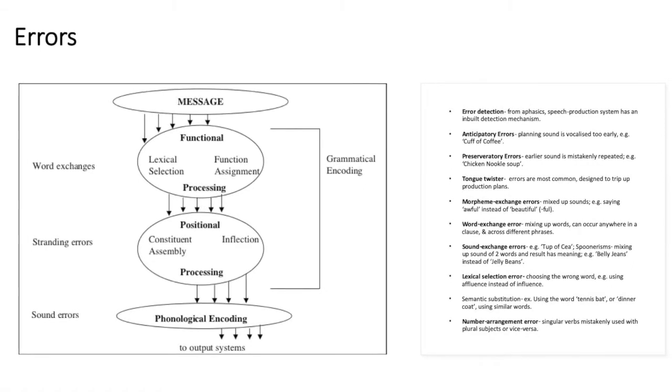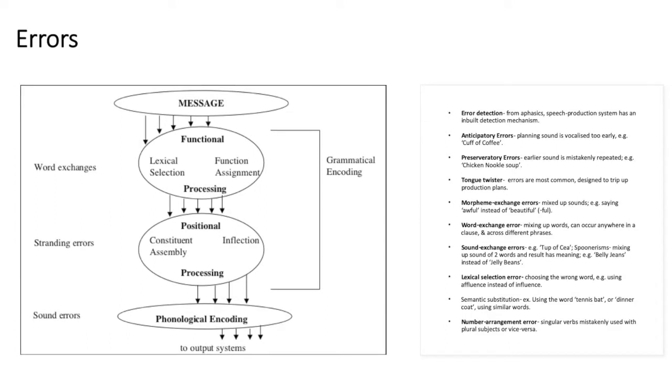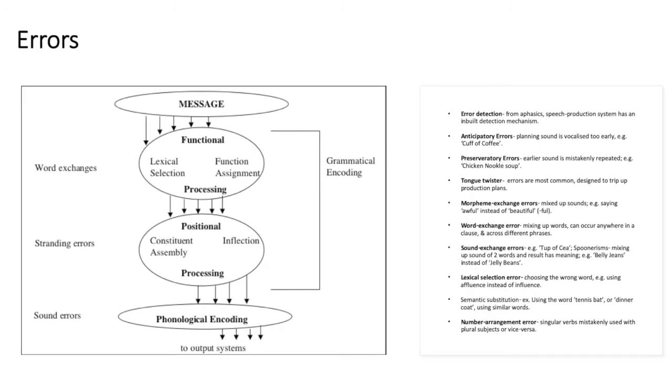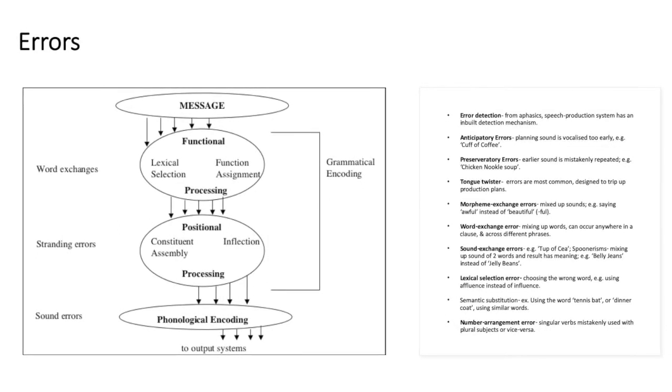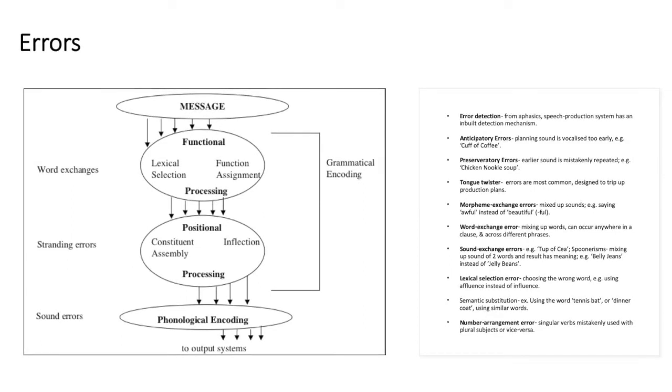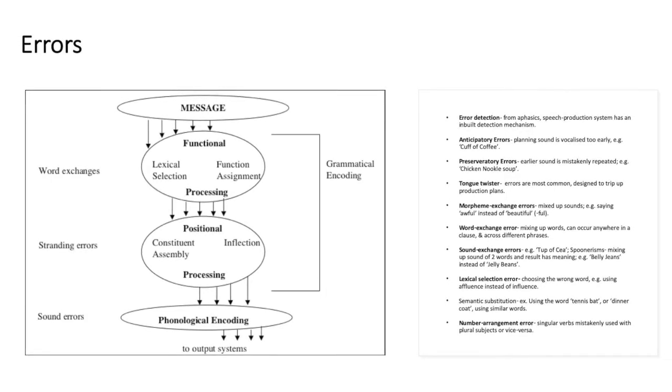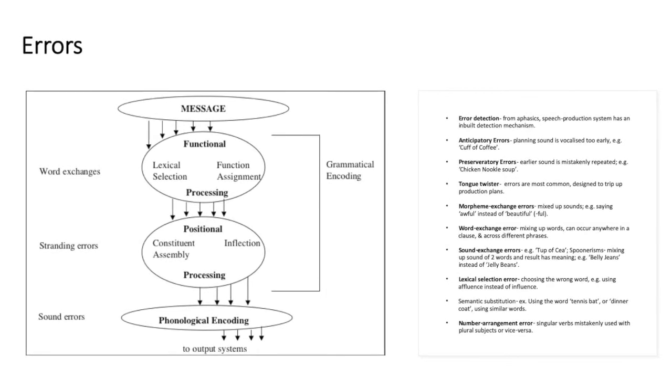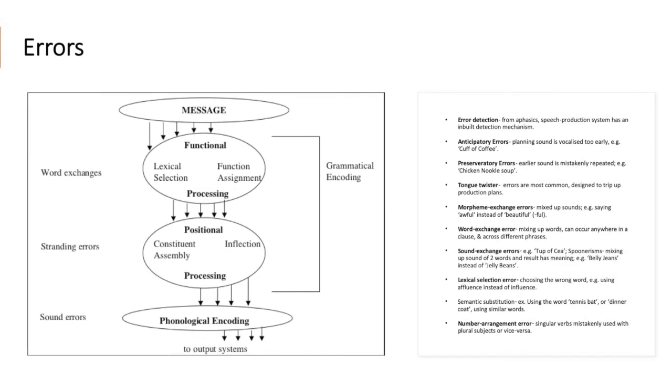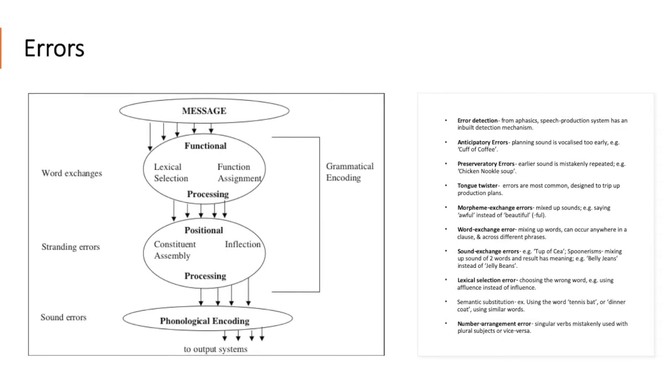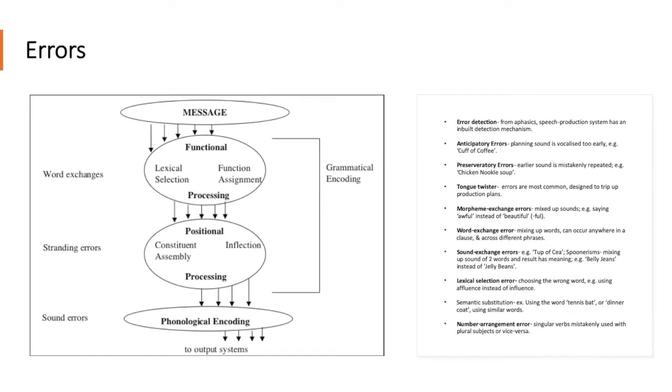Tongue twisters. These are errors that are most common and they are designed to trip up production plans, like she sells seashells by the seashore. Morpheme exchange errors. These are where mixed up sounds occur. For example, saying awful instead of beautiful because both of these words have full at the end. Word exchange errors. This is mixing up words and can occur anywhere in a clause and across different phrases. Sound exchange errors. For example, this can include a top of key as well as spoonerisms, which is mixing up sounds of two words and results in changing of meaning. So for example, you say belly jeans as opposed to jelly beans.